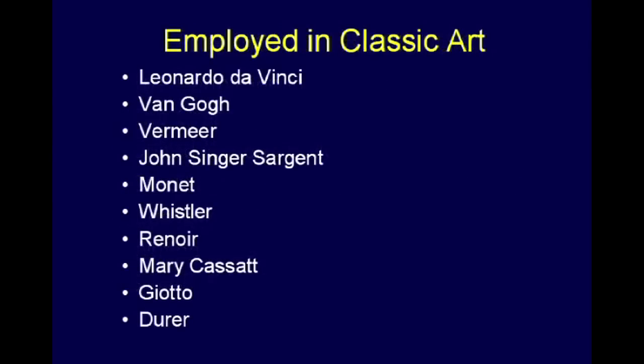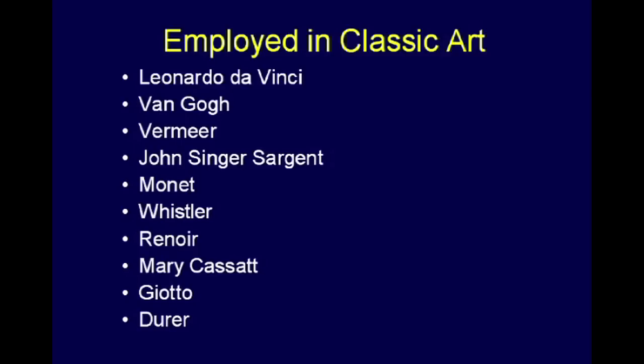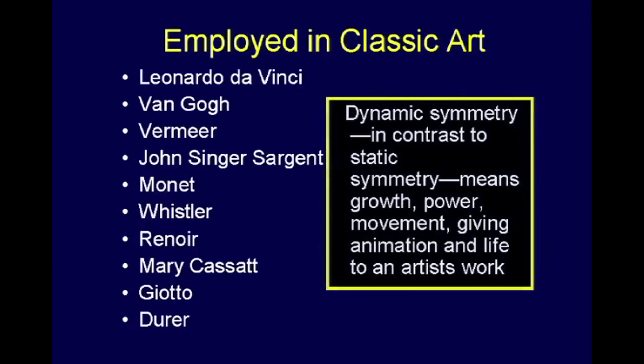In art, Leonardo da Vinci, Van Gogh, Vermeer, John Singer Sargent, Monet, Whistler, Renoir — many artists recognized that by building their art on that golden rectangle, it gave it vitality and movement. It was what they call dynamic symmetry, in contrast to static symmetry. So it implies growth, power, movement, and gives animation. The artists discovered that, and if you're a student of art, you're well acquainted with this.